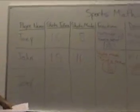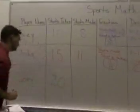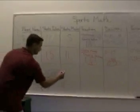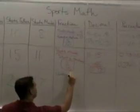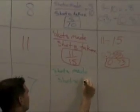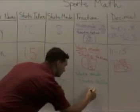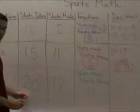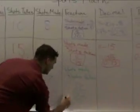In round three, we shot a total of twenty free throws, and he made a total of seventeen. Shots made over shots taken: seventeen over twenty. Box your answers in.